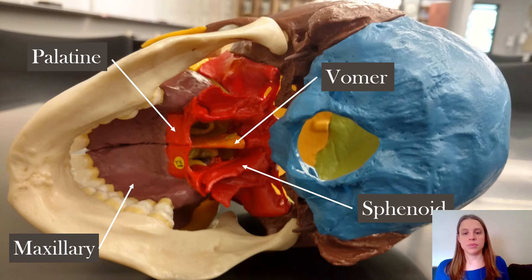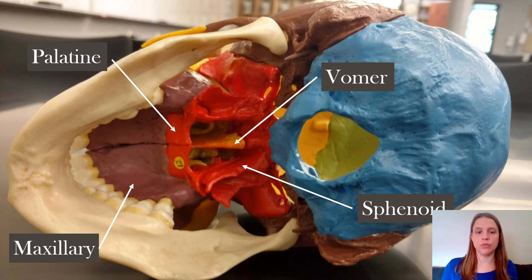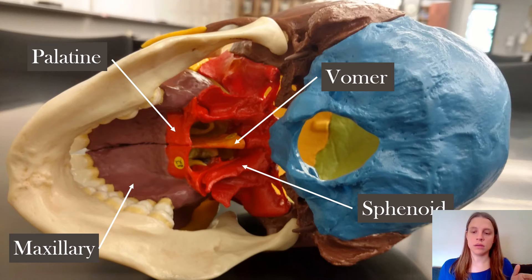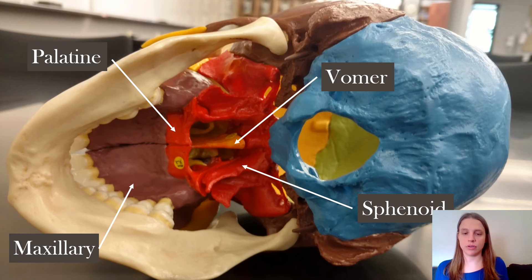Flipping the skull upside down, we can still see the vomer from the back and the sphenoid. You'll see the anterior one-third of the roof of your mouth is the maxillary bone, but the posterior one-third of your mouth is the palatine bone. The arrow is just pointing at the posterior one-third of your mouth — that's the palatine bones.